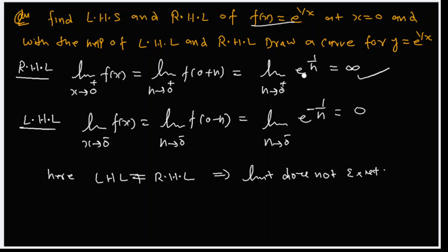When we find the left-hand limit, we substitute x = 0 minus h, giving e^(1/(−h)) = e^(−1/h). As h tends to 0, this is e to the power minus infinity, which equals 0. So the right-hand limit is infinity and the left-hand limit is 0 — they are not equal, so the limit does not exist.